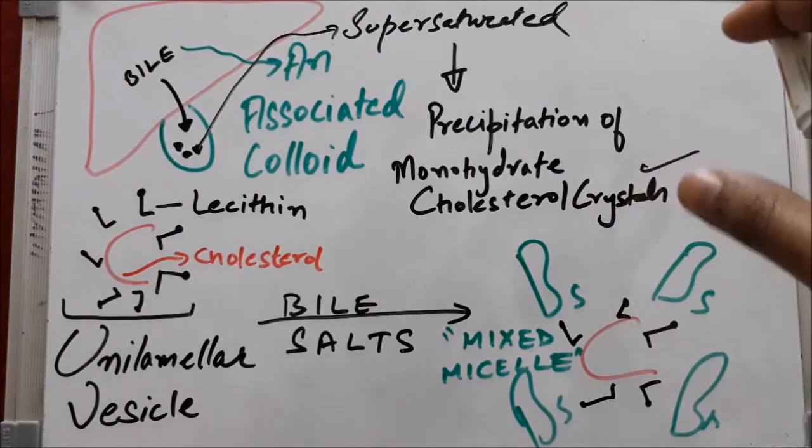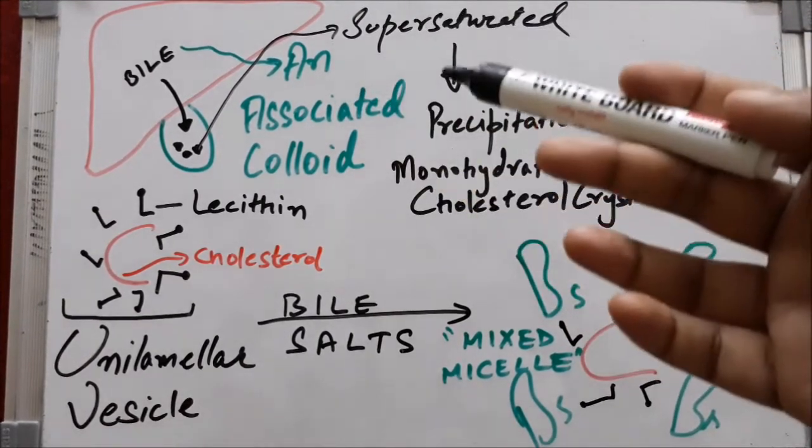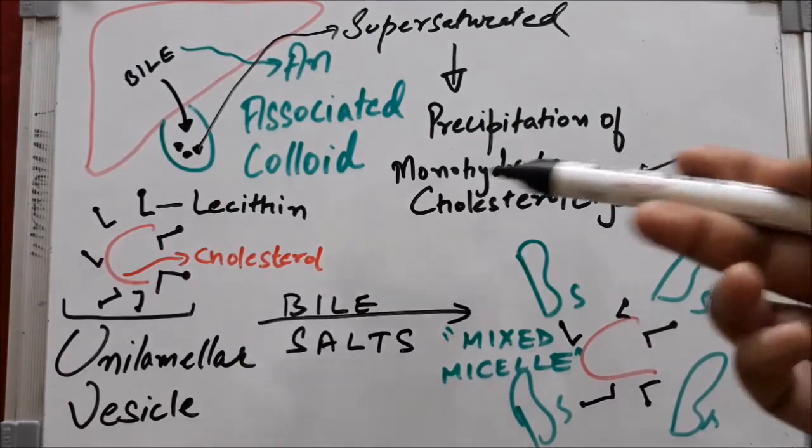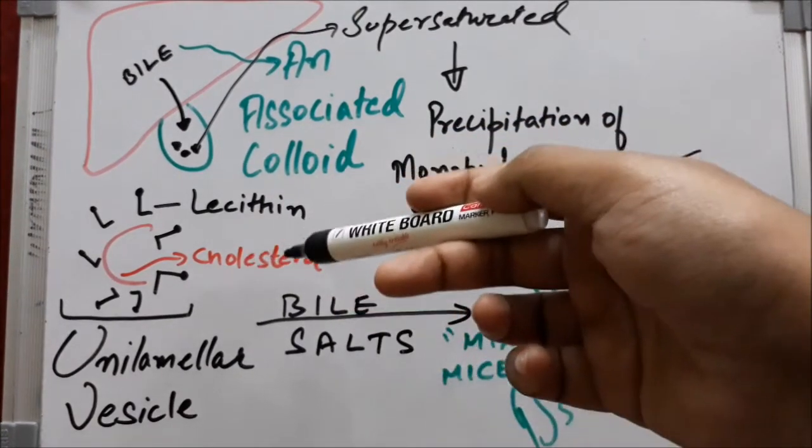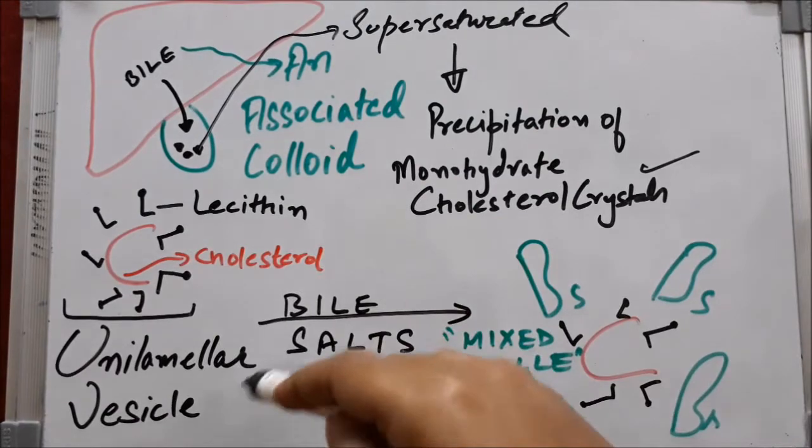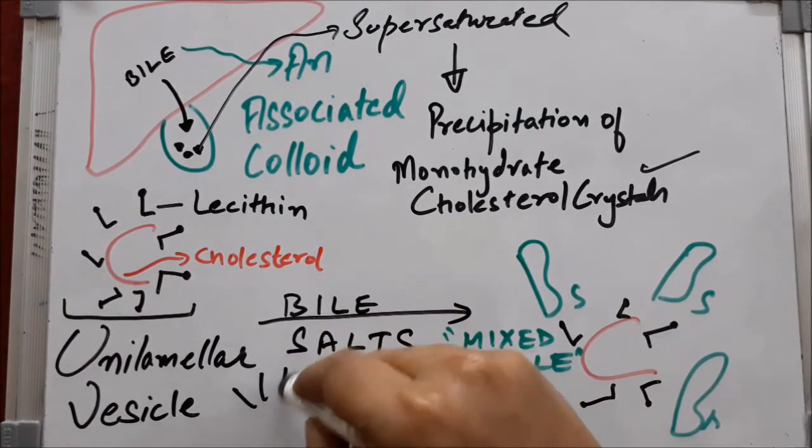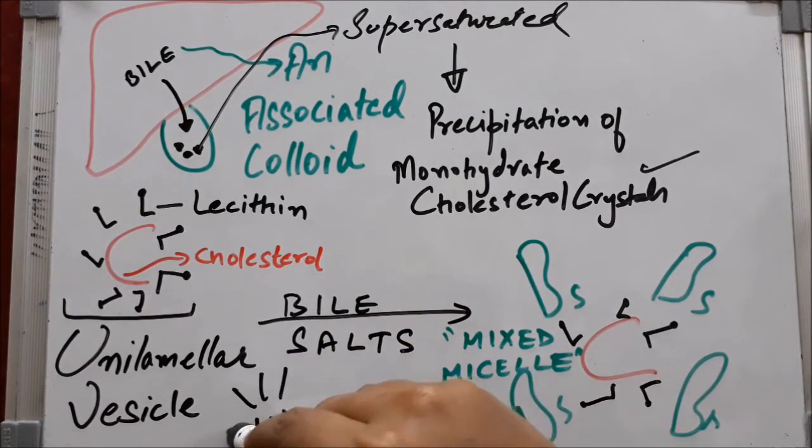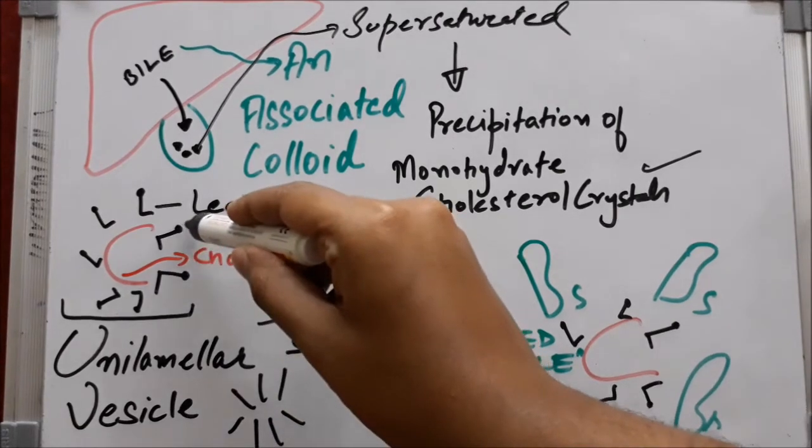Bile contains lecithin, cholesterol, and bile acids. Lecithin compounds with cholesterol to form the unilamellar vesicle. It's just like a phospholipid bilayer membrane where the outer part is hydrophilic...